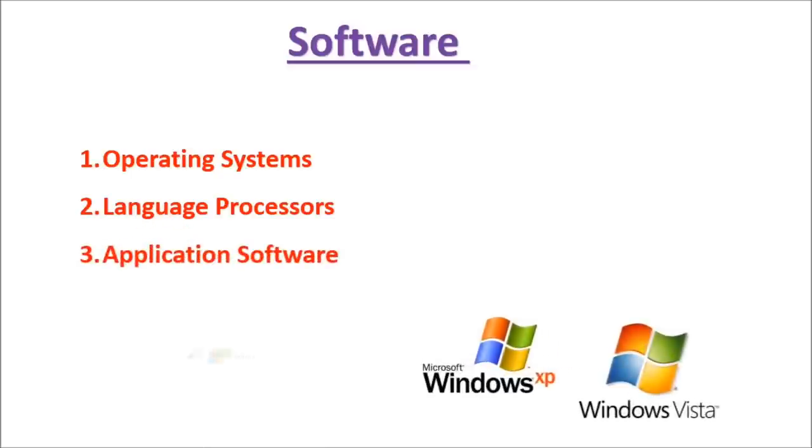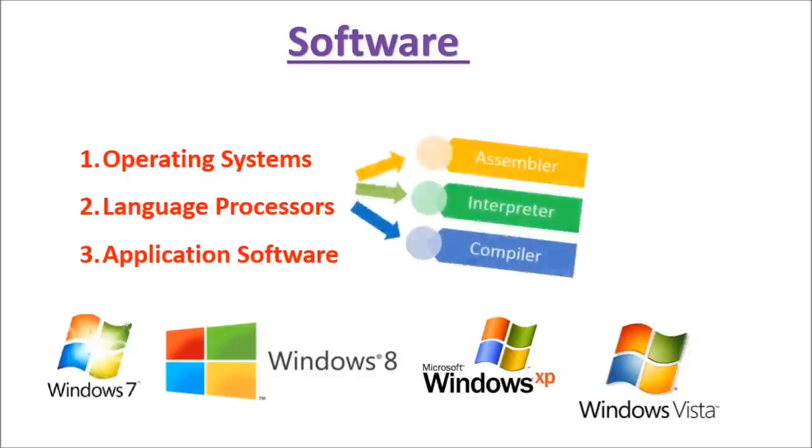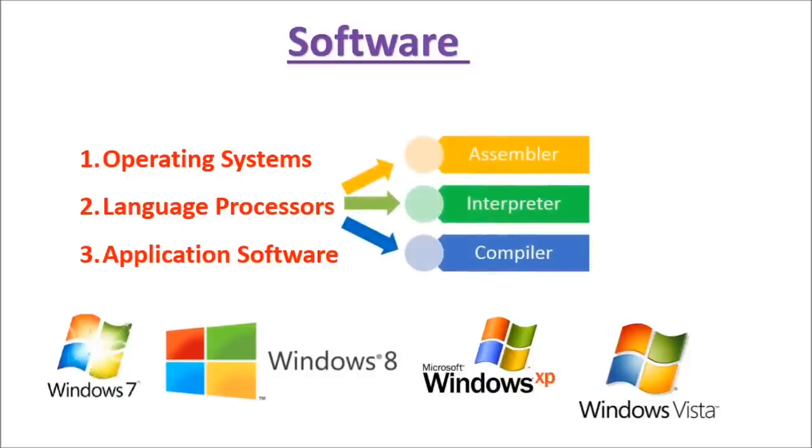Operating system is a set of programs which act as an interface between a user and hardware. Language processor converts high level languages to low level languages and vice versa. Language processors are of three types: Assembler, Interpreter, and Compiler.